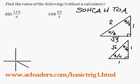That's going to be between 3 pi over 2, which is right here, and 2 pi, which is right here. Because 11 over 6 is greater than 3 over 2, but smaller than 2.